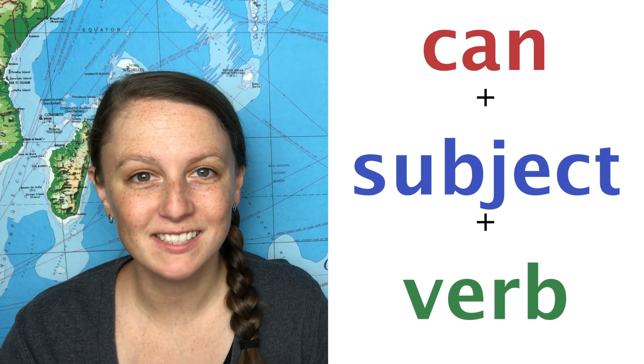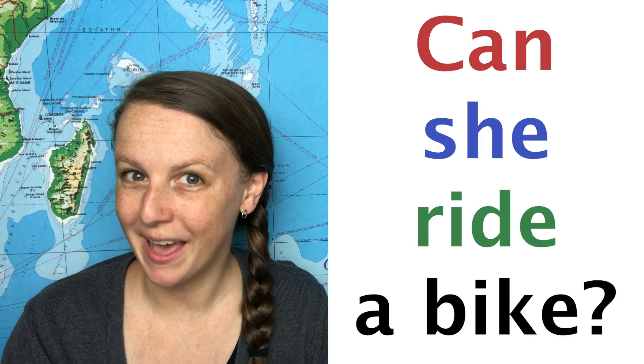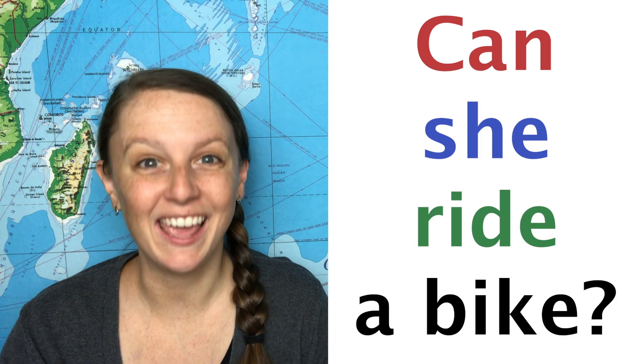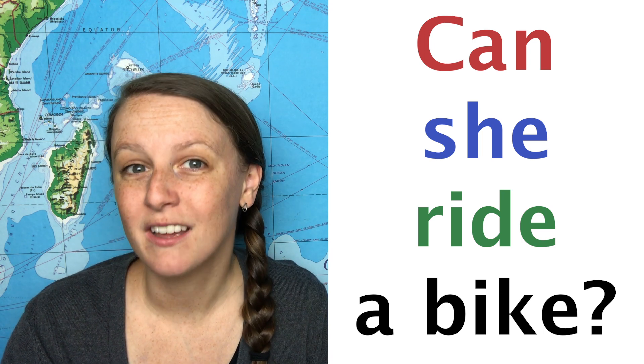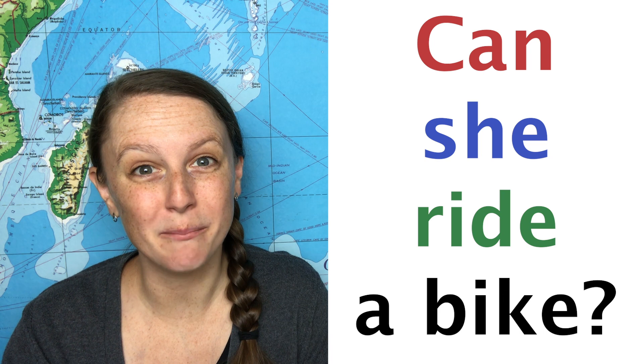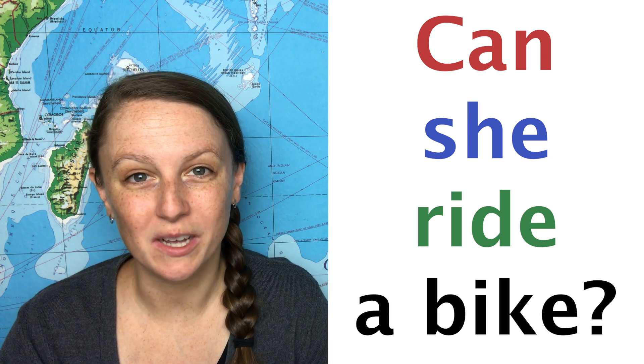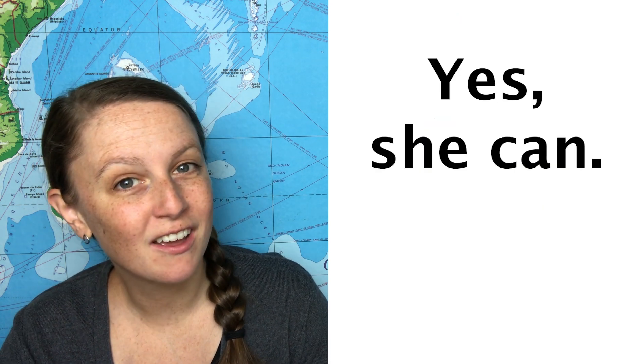For example, we can ask 'Can she ride a bike?' We have 'can', the subject 'she', and the main verb 'ride'. You can answer this question 'Yes, she can' or 'No, she can't'. So that's an example of a yes or no question. What if we want to ask an information question?